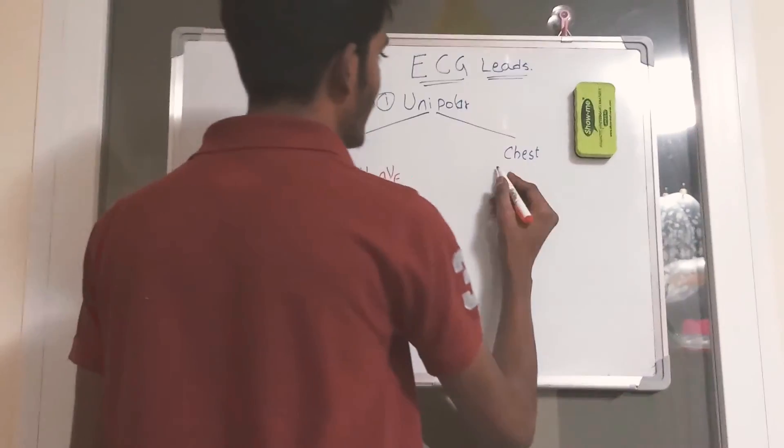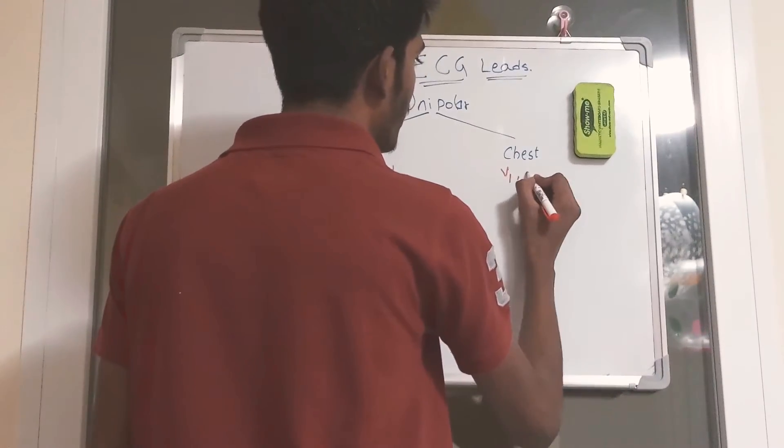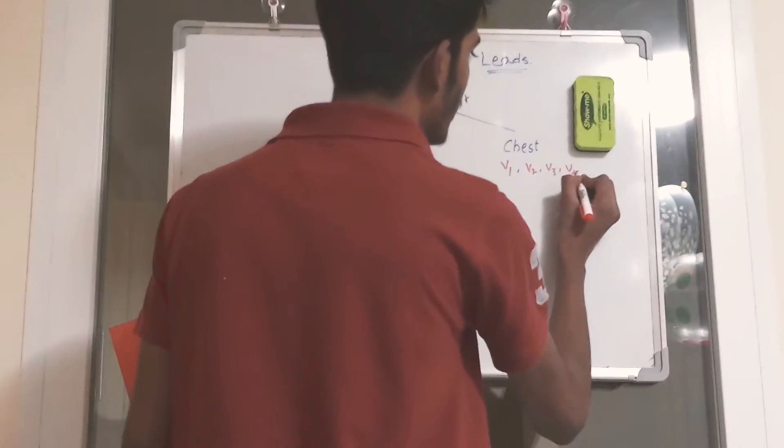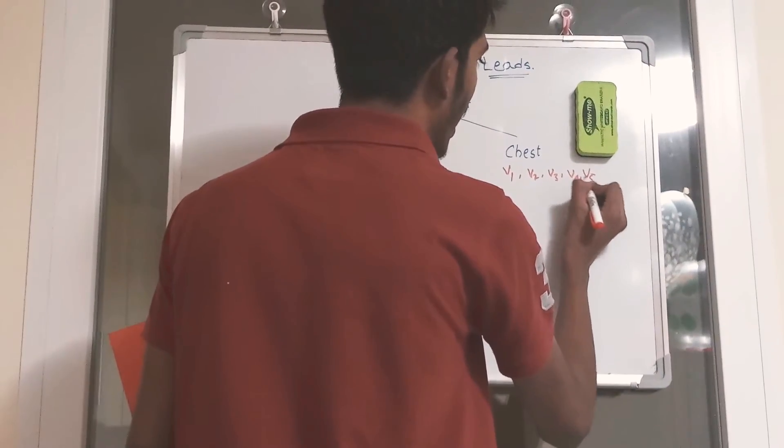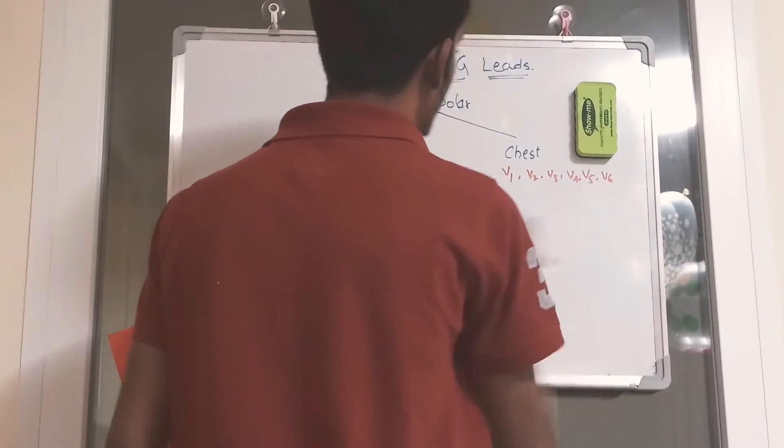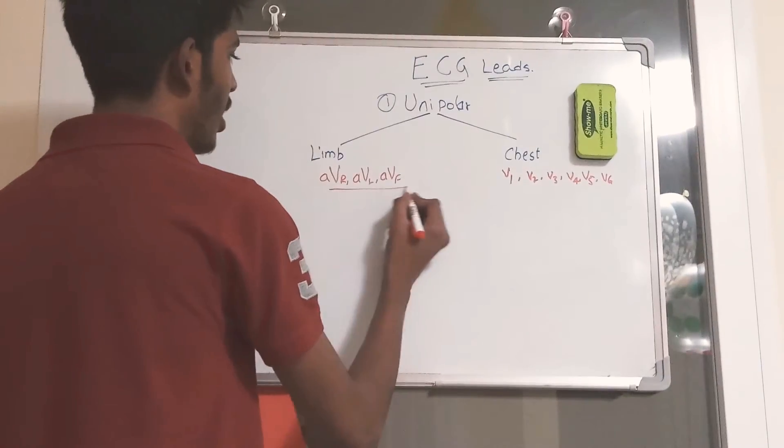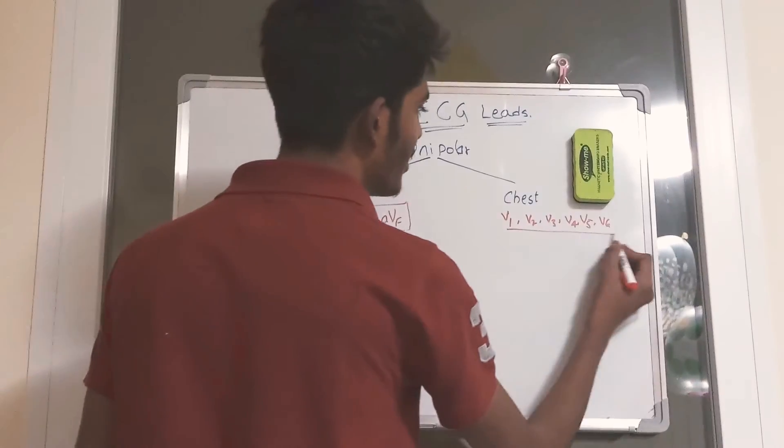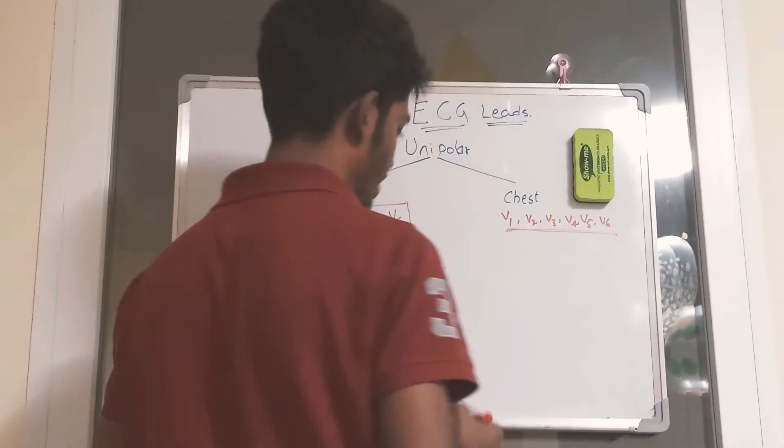The unipolar chest leads are from V1, V2, V3, V4, V5, and V6. Now, let's discuss how these six leads are connected on the human chest. These are confusing which one to place which side. I'm going to explain on the diagram now.